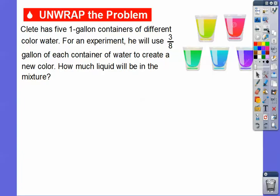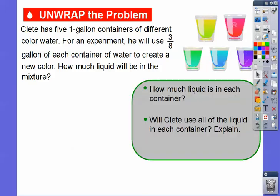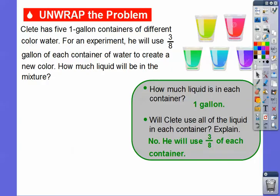Cleet has five one-gallon containers of different colored water. For an experiment, he will use three-eighths gallon of each container of water to create a new color. How much liquid will be in this mixture? There's one gallon in each container, and he's going to use three-eighths of each container. So in this lesson, we're going to multiply a fraction by a whole number.